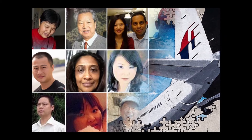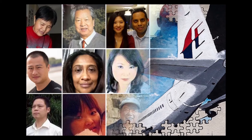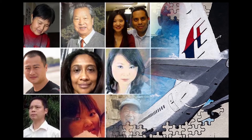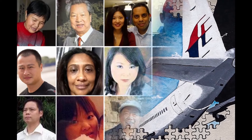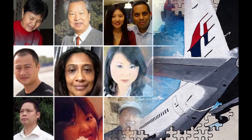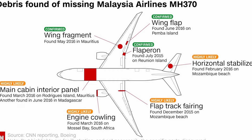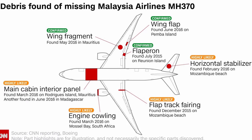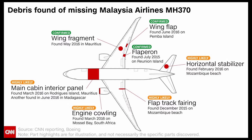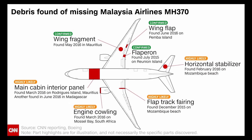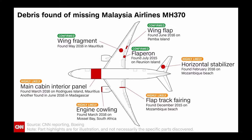The hijacking theory lacks credibility due to the absence of any group claiming responsibility or ransom demands. Mechanical failure seems unlikely due to the lack of distress signals or emergency communications from the crew. The accidental shootdown theory has been firmly denied by the countries allegedly involved. The mystery of MH370 has led to significant changes in international aviation safety regulations, including the implementation of better aircraft tracking systems.